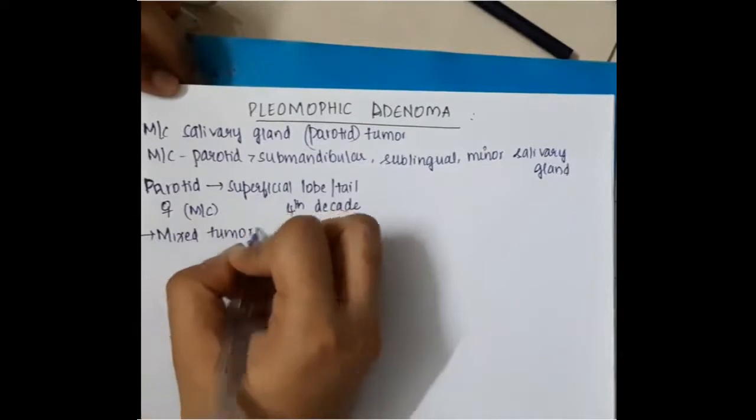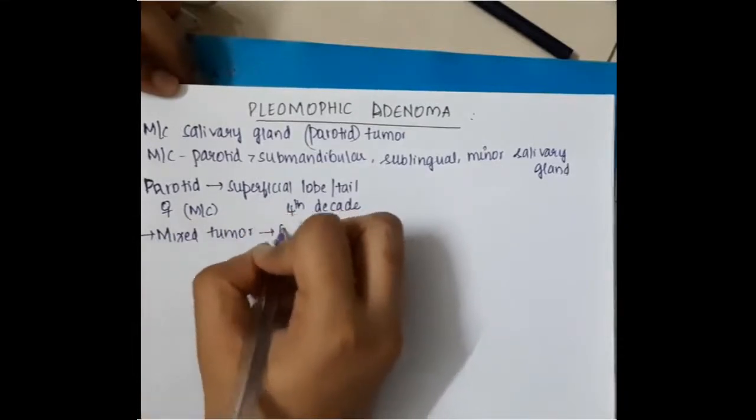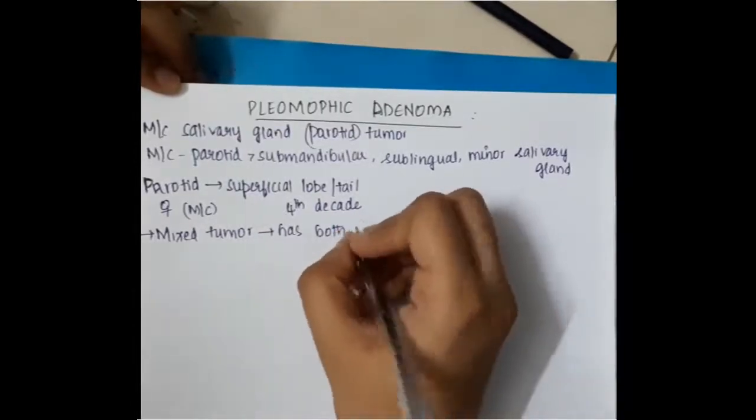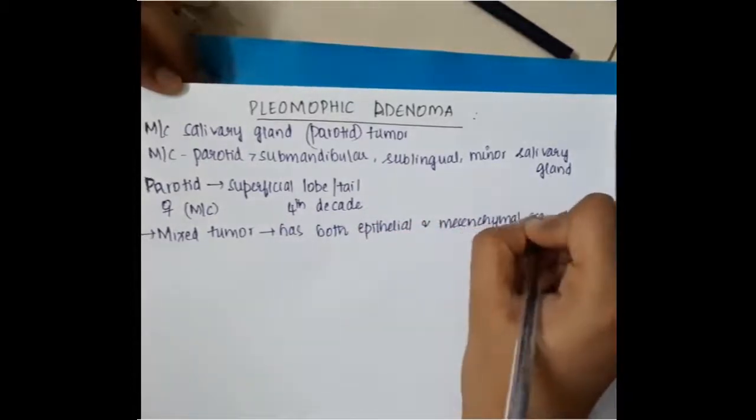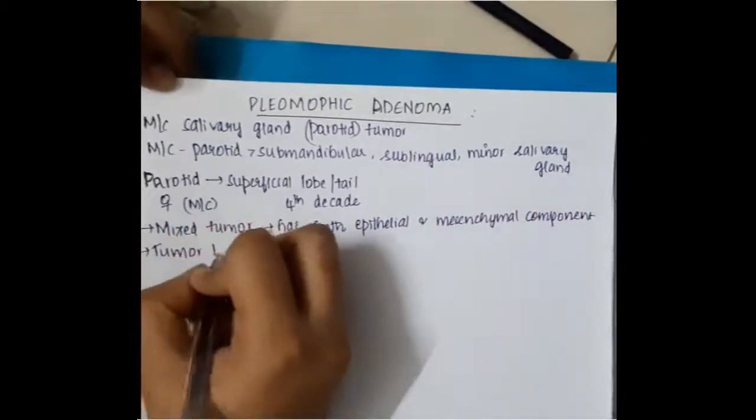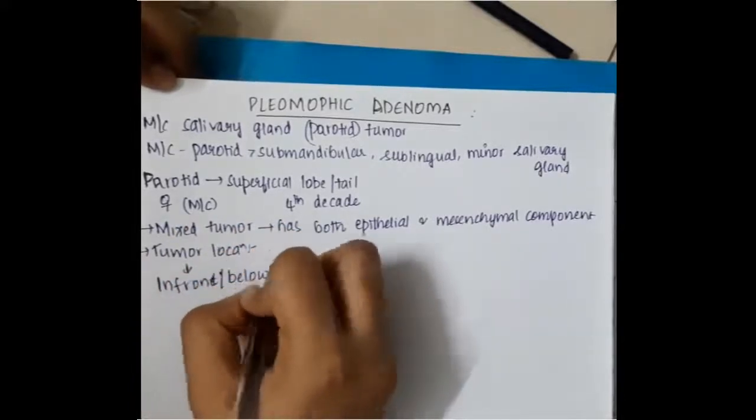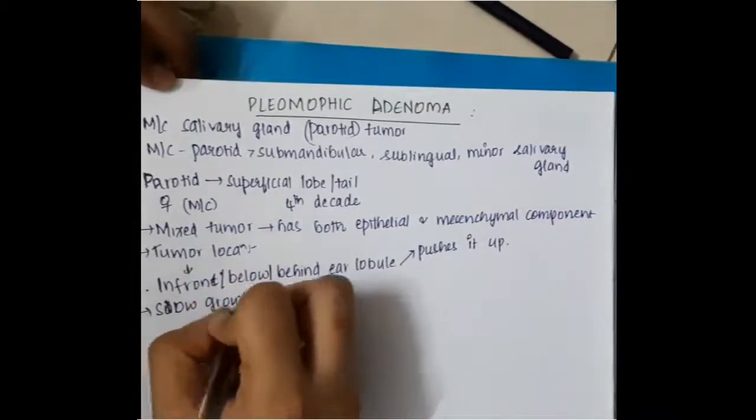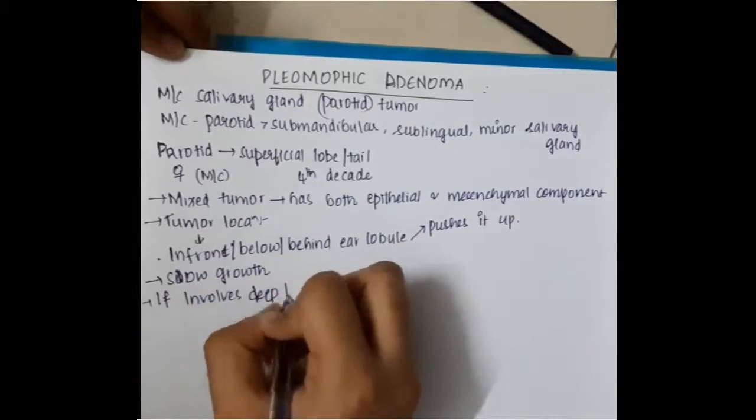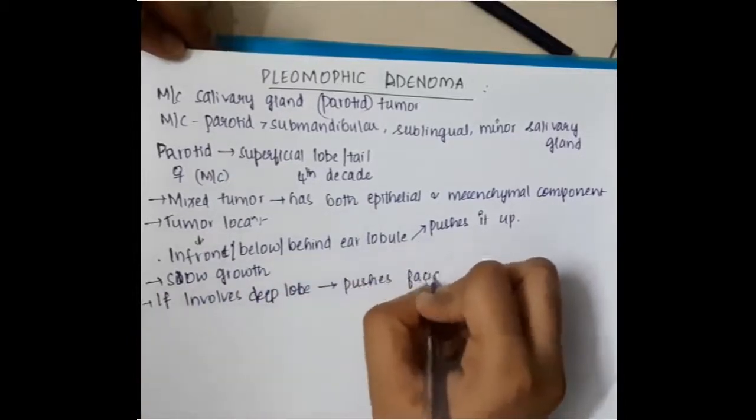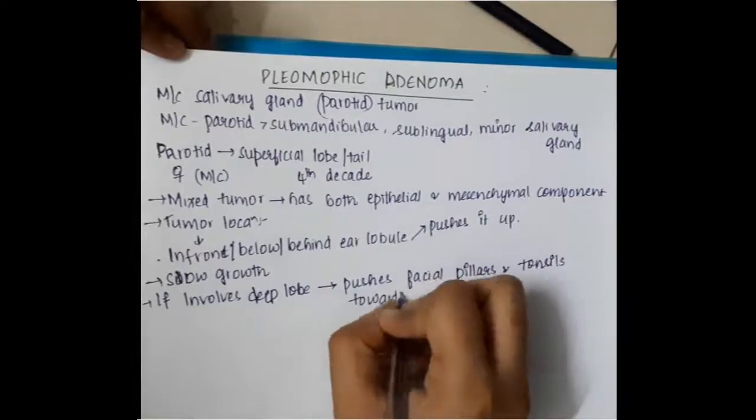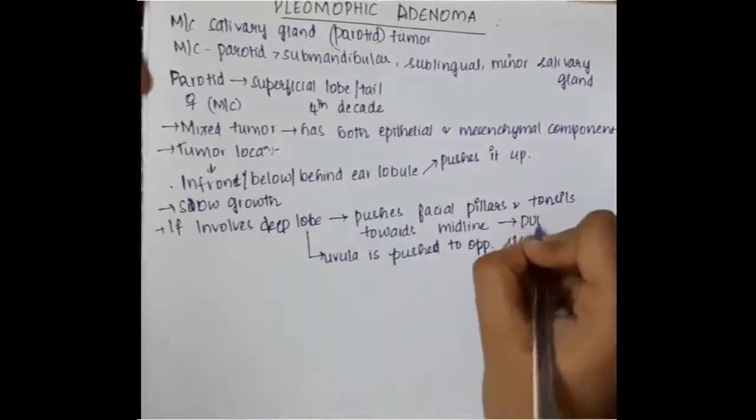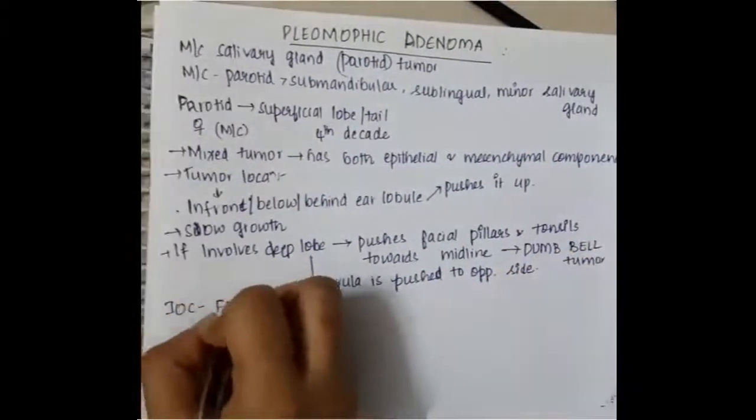This is most commonly seen in females and in the fourth decade. And here, it is a mixed tumor where we have both the presence of epithelial components and mesenchymal components in the parotid adenoma. The location of the tumor is present in front and below and behind the ear lobule and it pushes it up. You will see presence of slow growth and this pleomorphic adenoma, if this involves the deeper lobes, then it will pushes the facial pillar and tonsils towards the midline and even it pushes the uvula towards the opposite side.